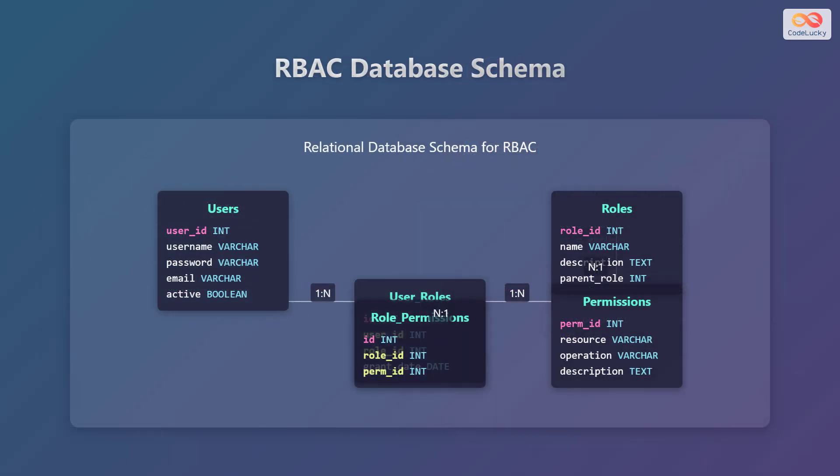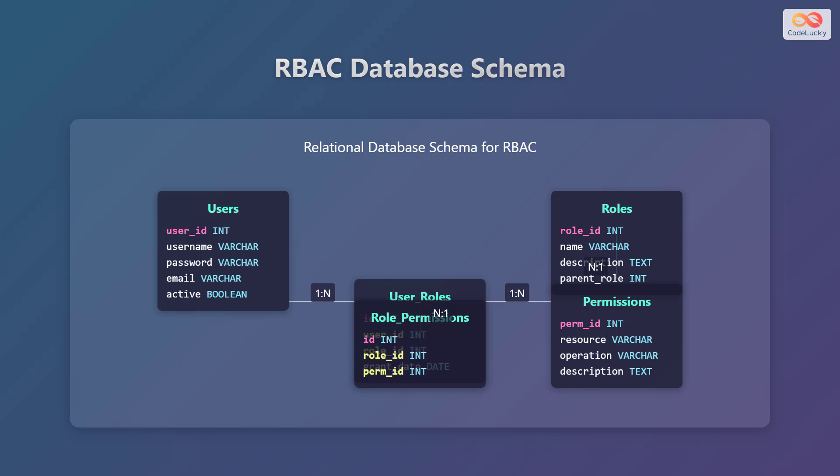Let's review the typical database structure used for implementing RBAC. This structure includes several tables. The users table stores user information such as user ID, username, password, email, and active status. The roles table stores role information including role ID, name, description, and parent role for hierarchical RBAC. The permissions table stores permission details like permission ID, resource, operation, and description.